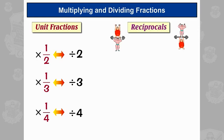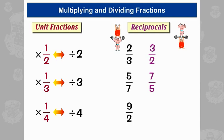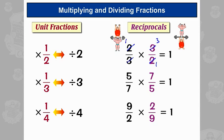Now for reciprocals — these are fractions that are upside-down versions of each other. So 2-thirds would become 3 over 2, and this is what we used when we were dividing fractions. For example, 5-sevenths has a reciprocal of 7 over 5, and the reciprocal of 9 over 2 is 2 over 9. If you times a fraction by its reciprocal, you always get an answer of 1, because you can always cancel down to get 1 times 1 over 1 times 1, which is 1.